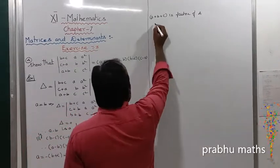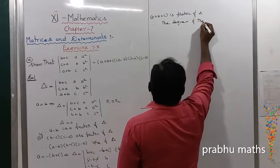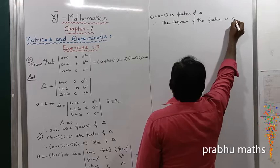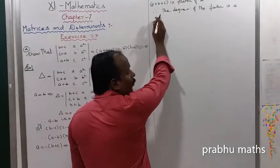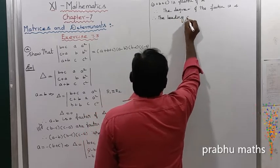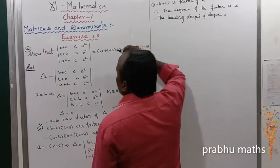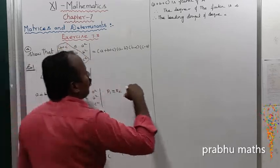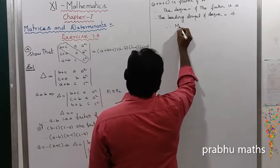Therefore, the degree of the factors (a-b)(b-c)(c-a)(a+b+c) is 4. The leading diagonal of the determinant has degrees: power 2, power 1, power 1, giving degree 1+1+2=4. The difference between the degree of the leading diagonal and the degree of the product of factors is 0, so m equals 0. Therefore the other factor is just a constant k.